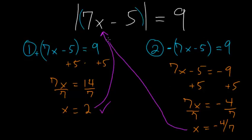And then we can plug in this minus 4 sevenths. 7 times this minus 4 sevenths - the sevens will cancel and we're left with just minus 4 here. And minus 4 minus 5 is negative 9. The absolute value bars will flip that so that we're left with just 9. So we know that each of these answers here are the correct answers.